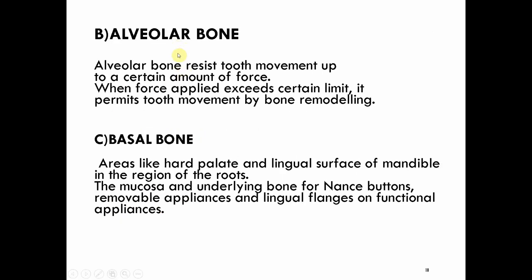Alveolar bone can resist tooth movement up to a certain amount of force, but beyond that limit it facilitates tooth movement due to bone remodeling. Basal bone examples include the hard palate and the lingual surface of the mandible. This is seen in cases of Nance button removable appliances and functional appliances, where the mucosa and lingual surfaces of the mandible and maxilla are used for anchorage.